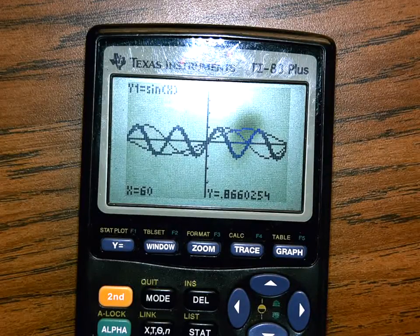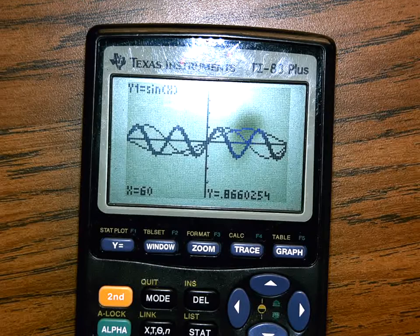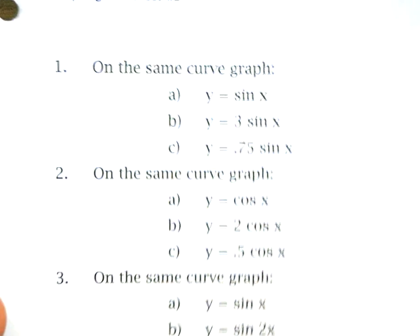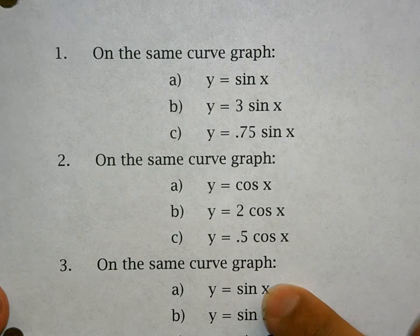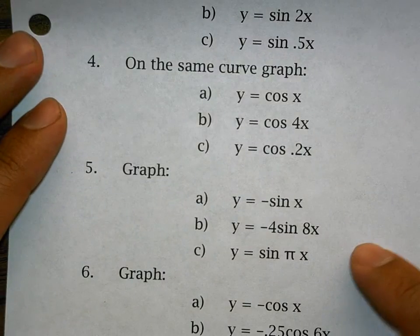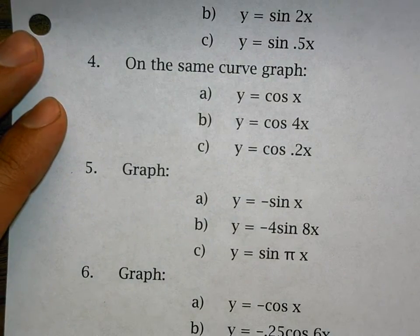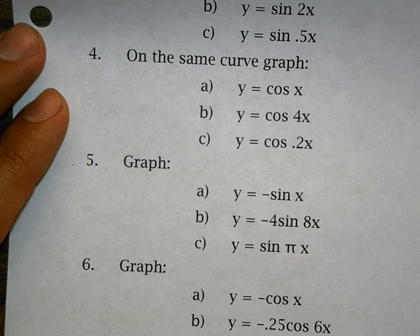So hoping that helps you finish up this worksheet. Last few things I would say is if it says on the same curve graph, that means you have one graph for all three things. And then down on number five, it just says graph. So you're going to have to have separate graphs for 5ABC and 6ABC.